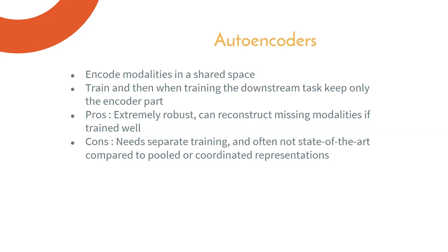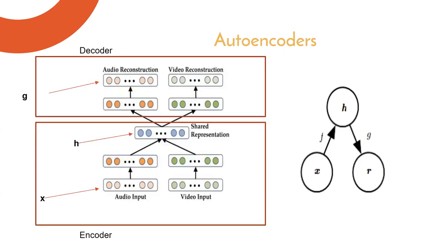One advantage of autoencoders is robustness. They're also useful when you have multiple modalities and are trying to reconstruct one modality given another. The main disadvantage is that they need a lot of training data to perform well, especially compared to pooled representations. A general autoencoder takes an input X, passes it through a function F to get a hidden representation, then passes that through a function G to get the reconstruction.